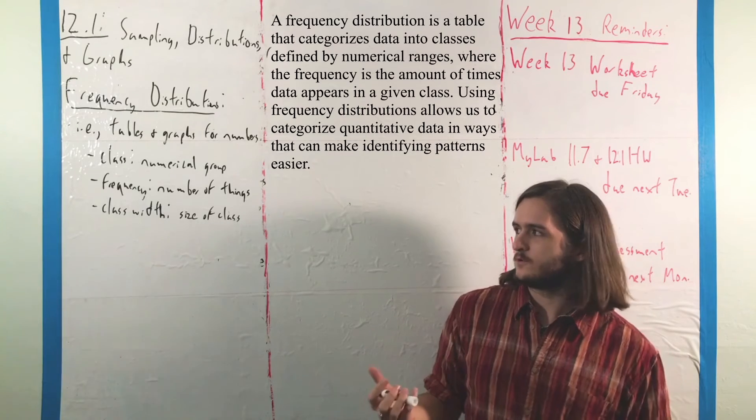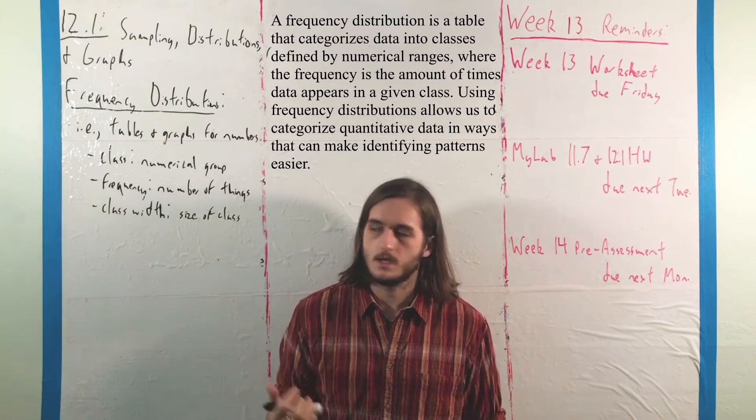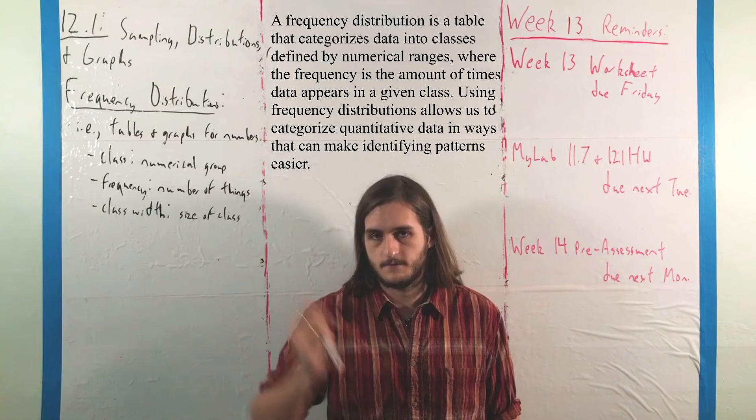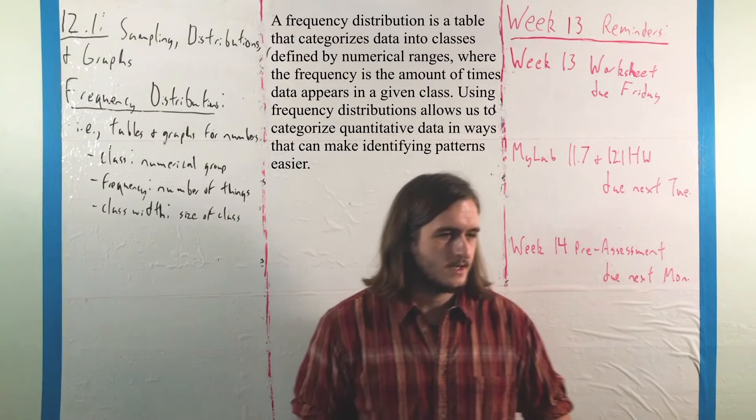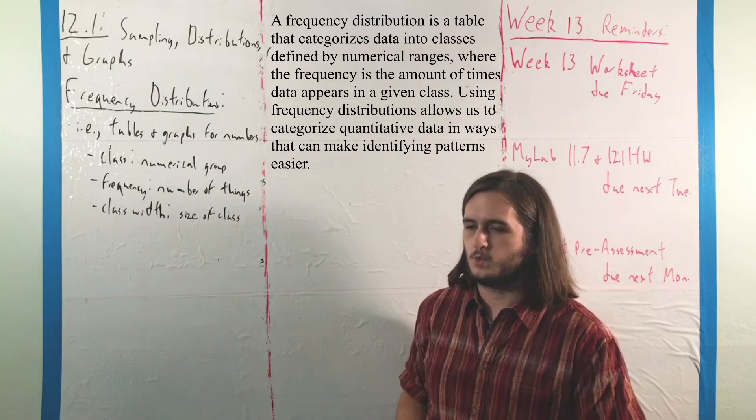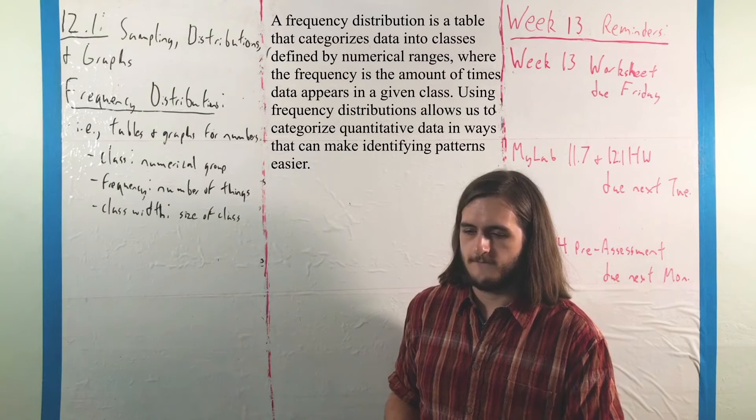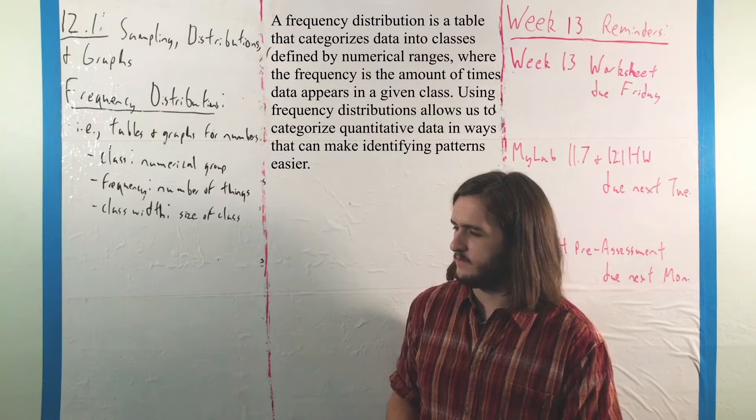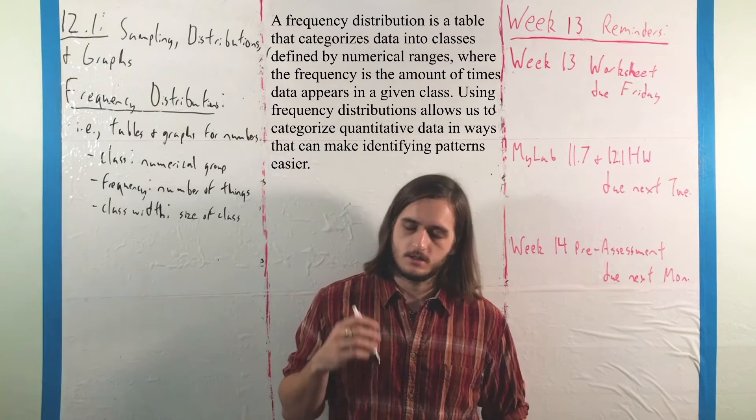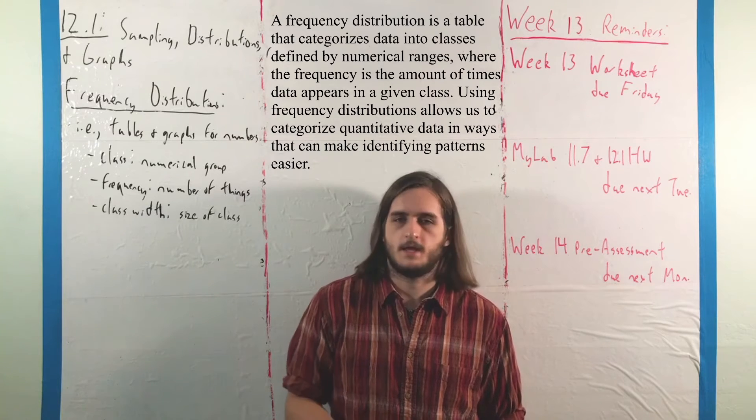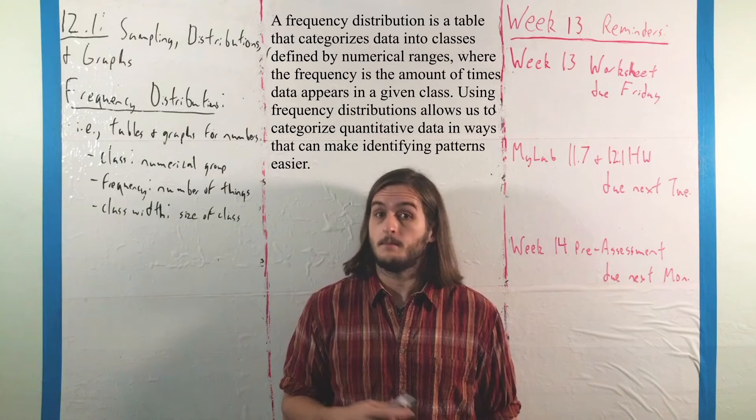And these are just numerical groups of things, where the frequency is the number of things in any given class, and the class width is the size of the class that we're making. And I'll say here that some texts would set this up in terms of wanting you to find a class width for a given number of classes, which leads to some really awful computations. Don't make a whole lot of sense to me and are quite annoying. But thankfully, this book doesn't do that. I'm the first book I've had that doesn't, and I actually really appreciate it for that.